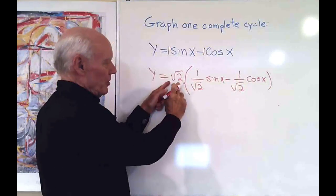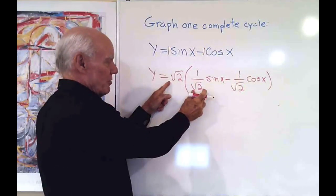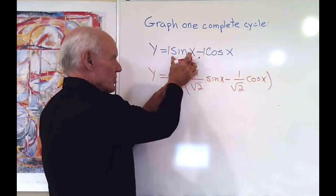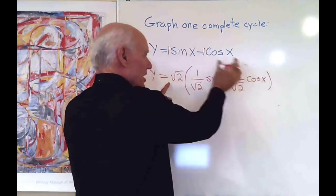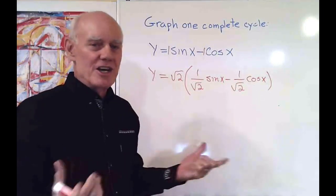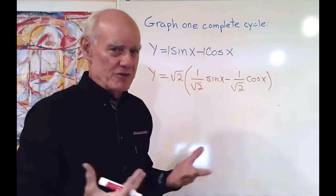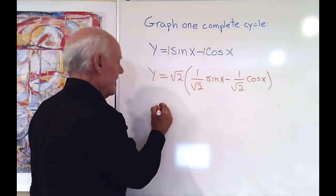So I can see that if I multiply square root two times one over square root two, I get one times sine x, which is sine x. If I multiply square root two times one over square root two times cosine x, I just get one cosine x. So I haven't changed that expression. I've just changed the way it looks.